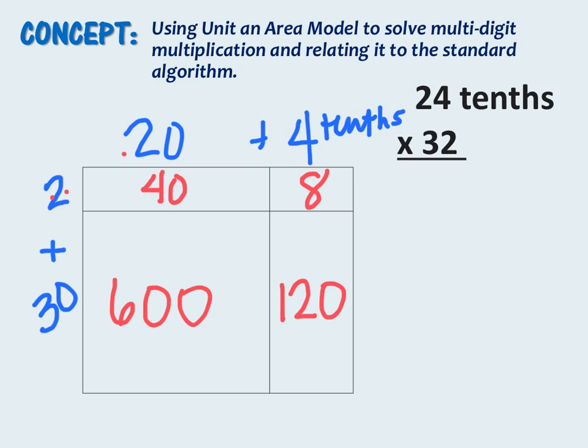Now we simply add our rows to get our partial products. 40 plus 8 is 48. 600 plus 120 is 720. Now we add our partial products. We get 8, 6, 7.